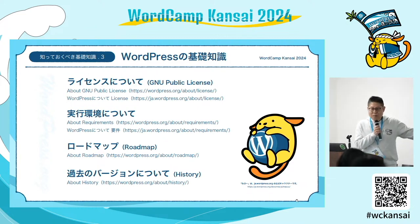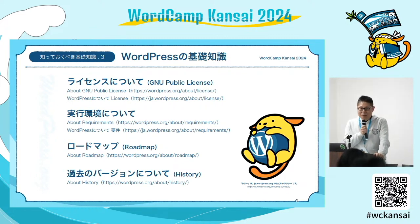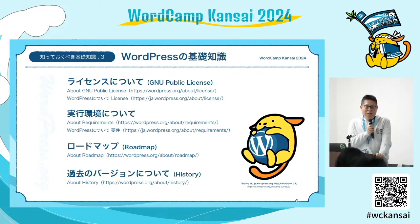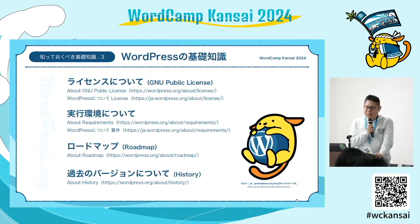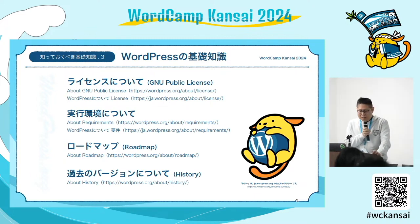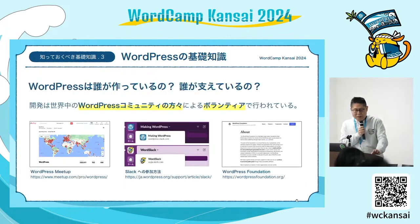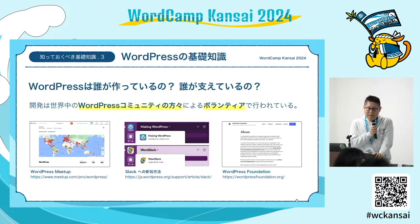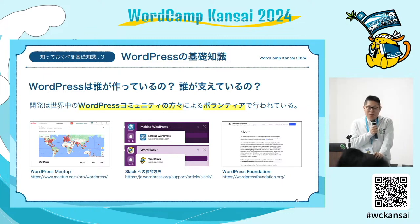ワードプレス.orgに行くとライセンスであったり実行環境とかロードマップとか過去のバージョンとかが掲載されているので、よく分かんないブログ読むよりかまずここ読みましょうと伝えてあげる必要があります。ワードプレスの基礎知識で3つ目、これは私は本当に教える人たちは絶対触れてほしいところなんですが、ワードプレスを誰が作ってるの、誰が支えてるのというところですね。無料で使い続けるということはどういうことなのかを最初に伝えてあげるということが必要です。